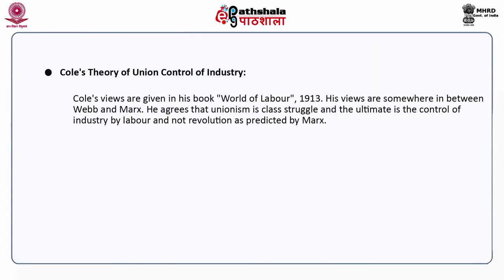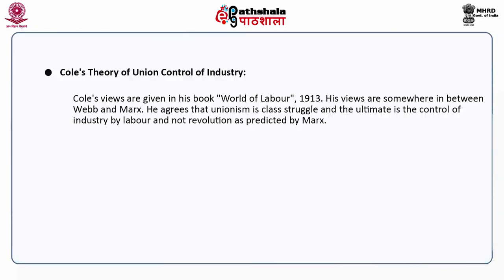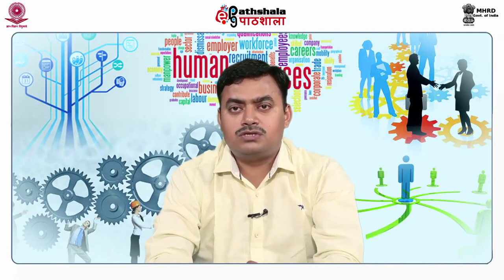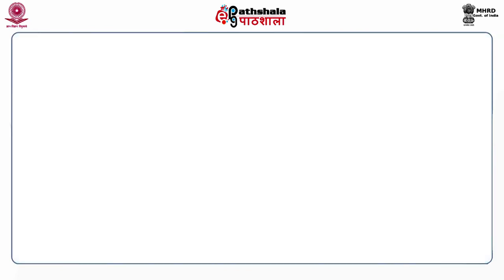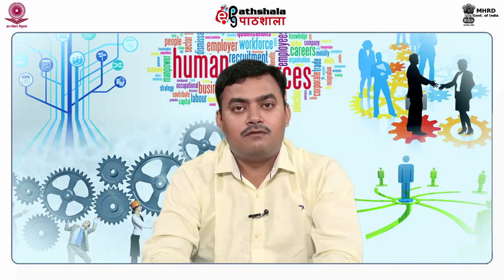According to Coley's theory of union control of industry, Coley's views are given in his book World of Labour, 1913. His views are somewhere in between Webb and Karl Marx. He agrees that unionism is a class struggle and the ultimate goal is the control of the industry by labor — and not revolution as predicted by Marx. Common's environment theory — he was skeptical of generalizations and believed only that which could be proved by evidence. He agreed that collective bargaining was an instrument of class struggle, but summarized that ultimately there will be a partnership between employers and employees. Michel's economic protection theory of trade unionism — Michel, who was a labor leader, completely rejected individual bargaining. According to him, unions afford economic protections. Simon's theory of monopolistic anti-democratic trade unionism — he denounced trade unionism as a monopoly founded on violence, and claimed monopoly power has no use save abuse.